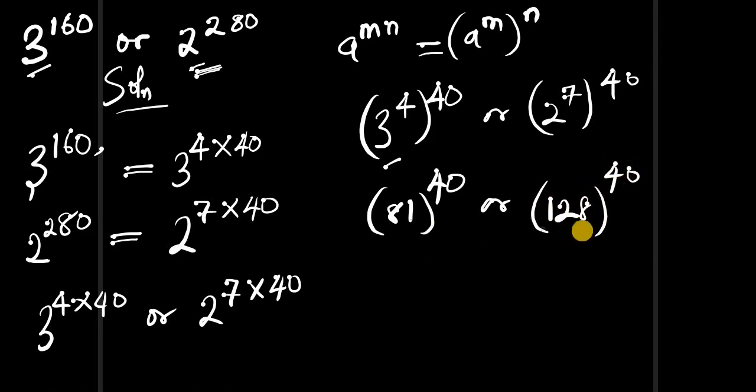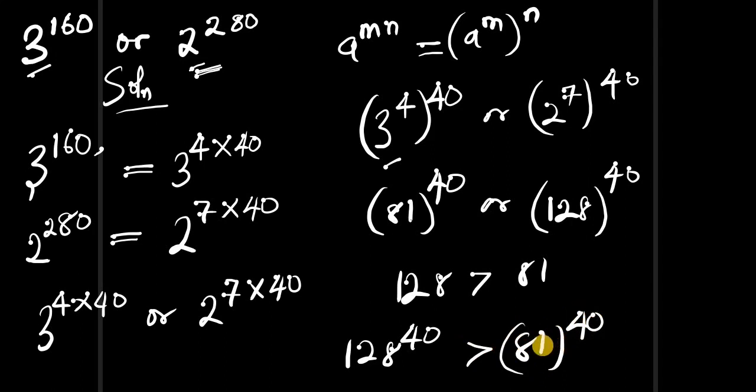Now compare the bases. Since the exponents are the same, 128 is greater than 81, meaning 128 to the power 40 is greater. This translates to the fact that 2 to the power 280 is greater than 3 to the power 160.